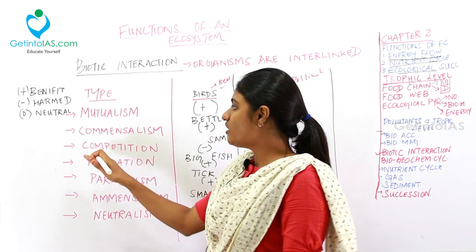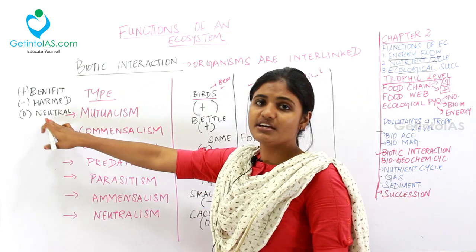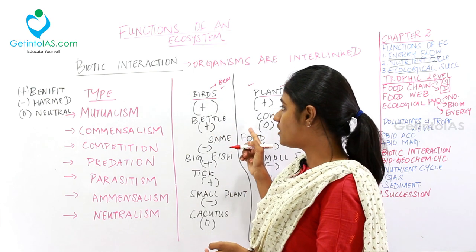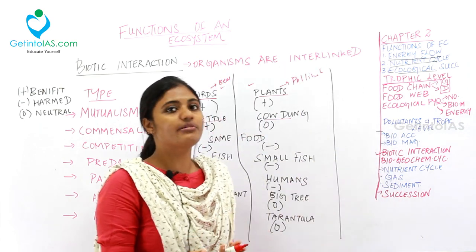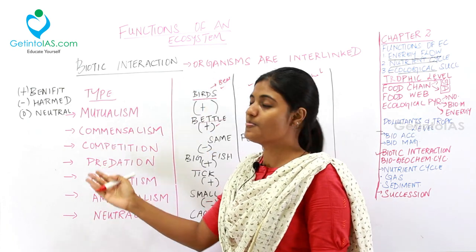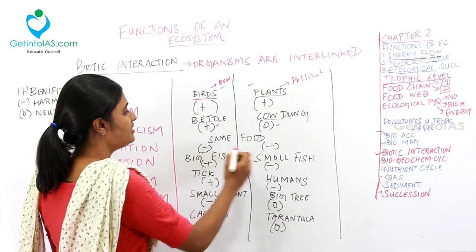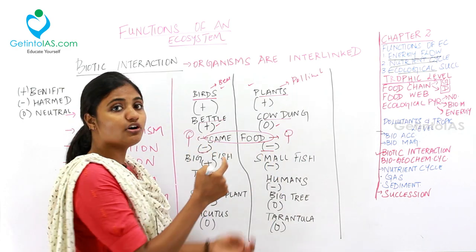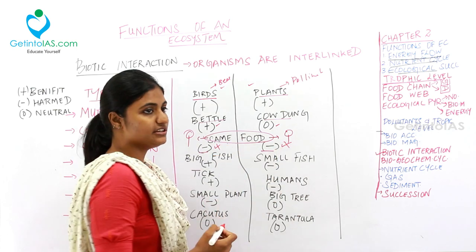In commensalism (+/0), one organism is benefited and the other is neutral — for example, a beetle living on cow dung benefits, but the cow is neither harmed nor benefited. In competition (−/−), both organisms are harmed because they compete for the same resource — for example, two organisms fighting for the same food. Hence both are negatively affected.